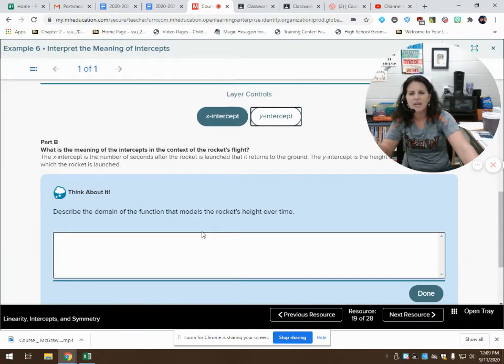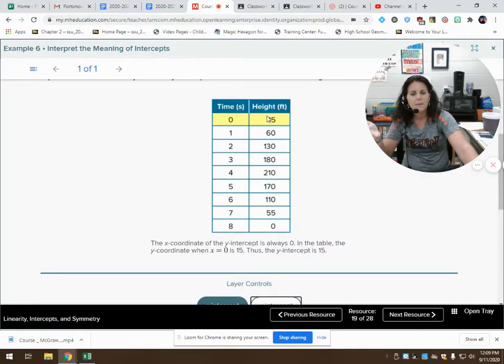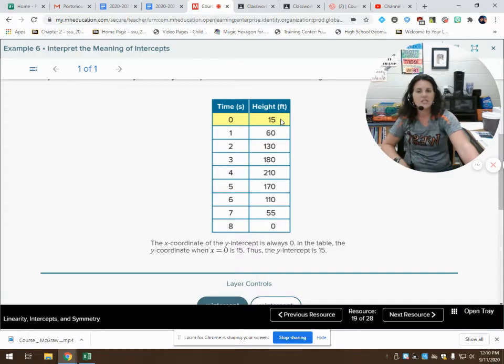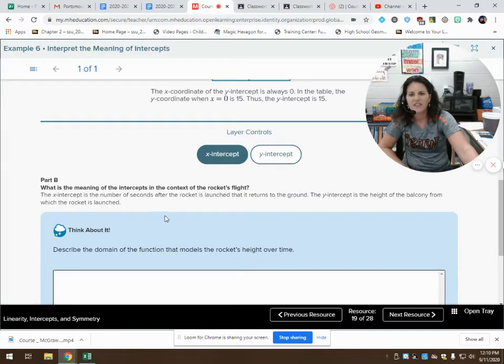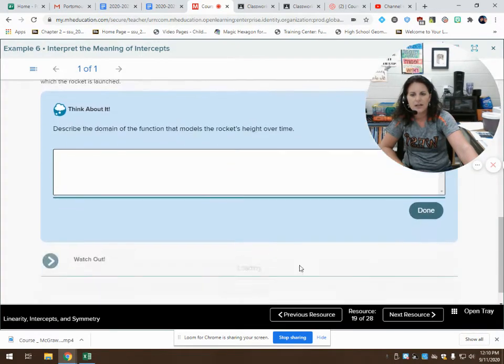Part B. What is the meaning of the intercept? The x intercept having a time of 8 seconds tells me that after 8 seconds of flight, the rocket hits the ground. That's what the x intercept means. The y intercept means when my rocket was launched, it already started off at 15 feet in the air. So the y intercept is the height of the balcony from which the rocket is launched.